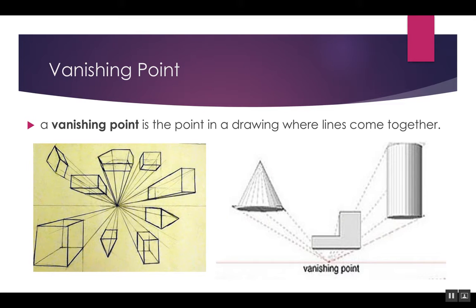The vanishing point is a point in a drawing where the lines come together. This is where everything will disappear off into the horizon — almost like when the sun sets and you have that one little point where the sun just disappears and flashes before it sets. The vanishing point is where our vision would disappear off into the horizon and vanish; everything appears to go away.